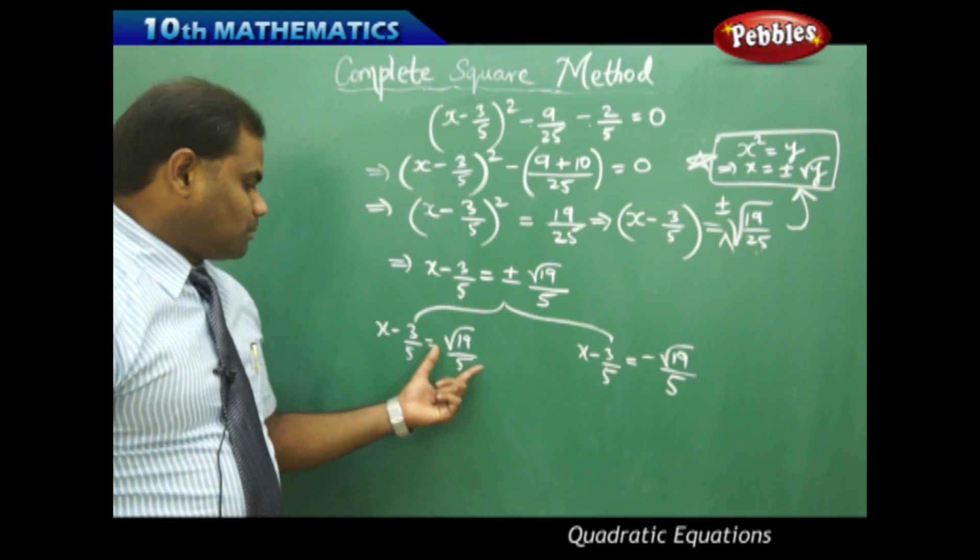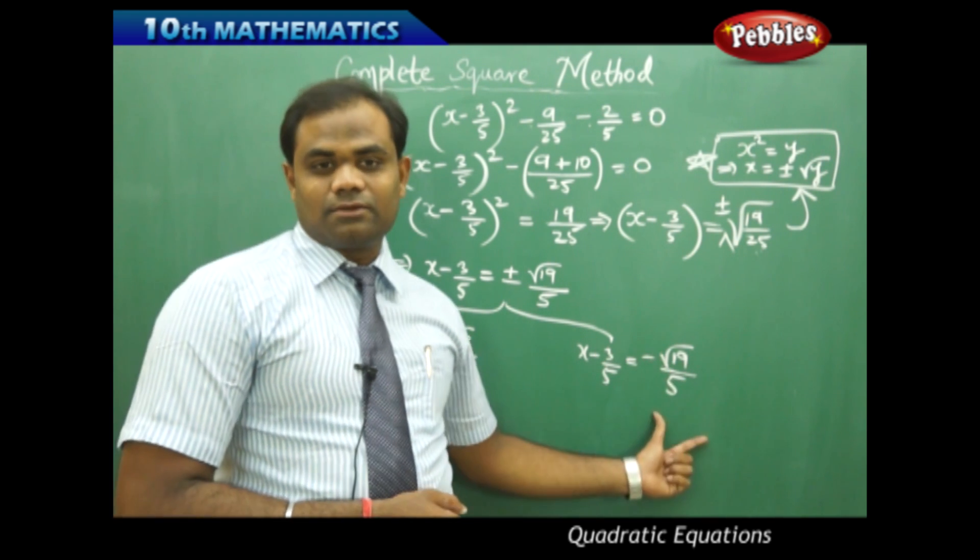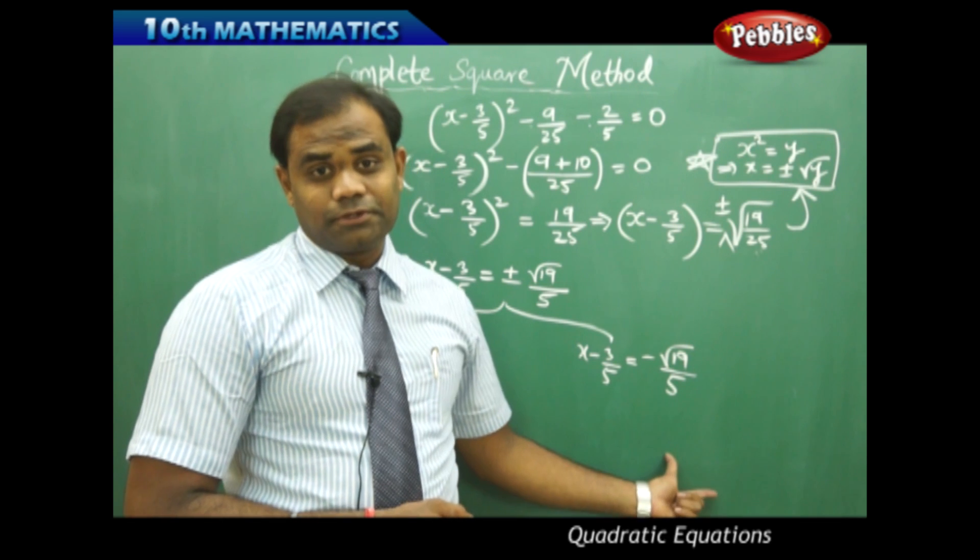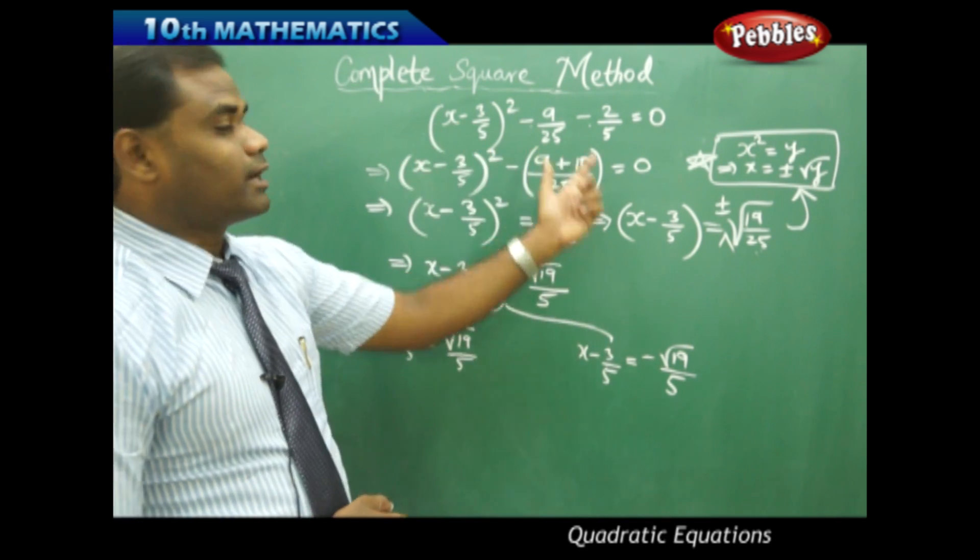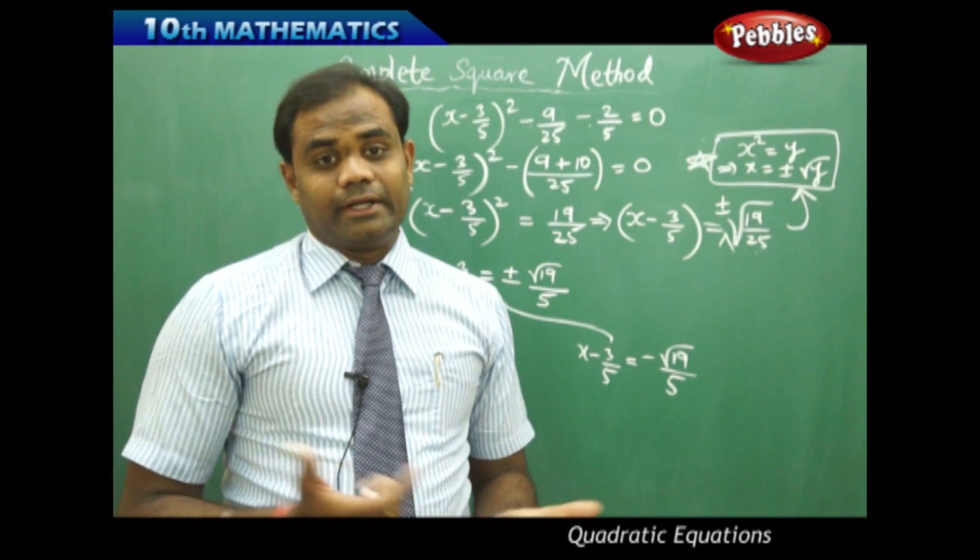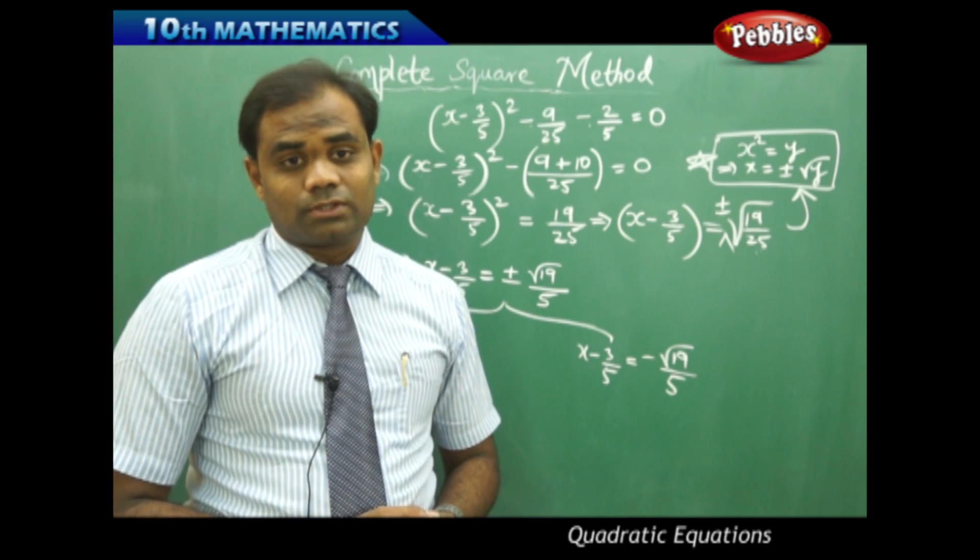Thus one of the plus giving me one solution of x and one of the minus giving me the second solution of x. Therefore I'll get two solutions for a quadratic equation with degree equal to 2, at most two solutions.